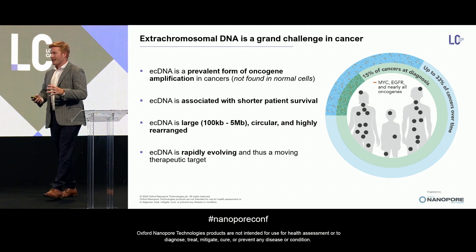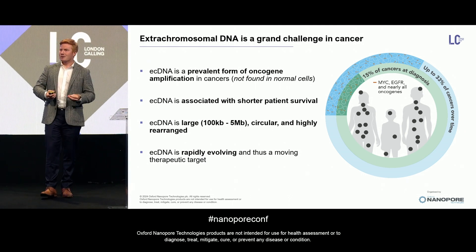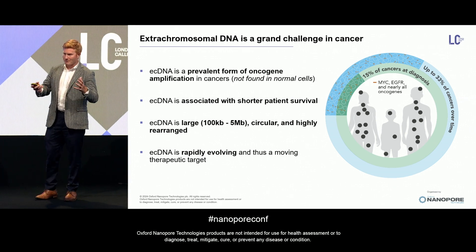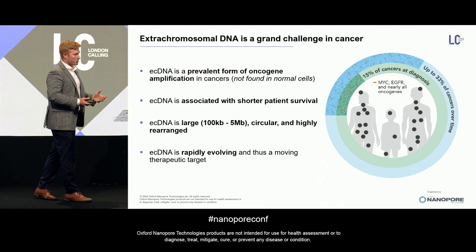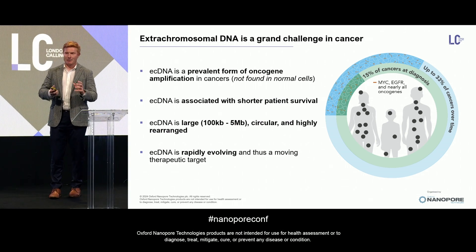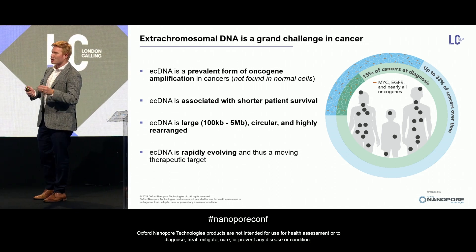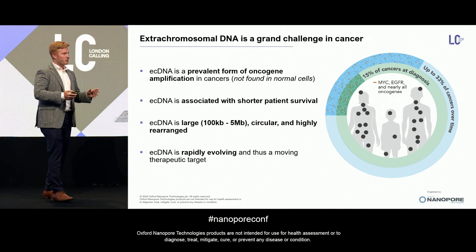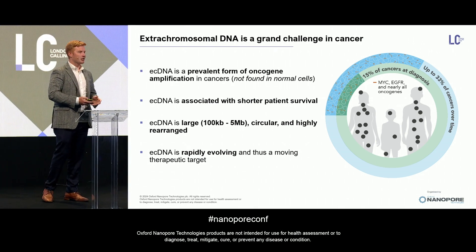ECDNA is associated quite significantly with shorter patient survival, and yet it's very difficult to study because of its large scale — often a megabase at least in size — circular nature, and highly rearranged structure, often containing segmental duplications, triplications, etc. It's also rapidly evolving, so it's very important for therapeutic resistance. For these reasons, it's been designated as a grand challenge in cancer.